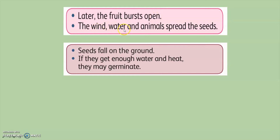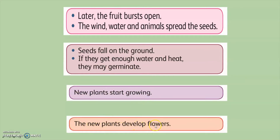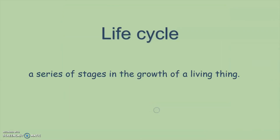Later, the fruits burst open. Wind, water, and animals spread the seeds. Seeds fall on the ground. If they get enough water and heat, they may germinate and new plants start growing. The new plants develop flowers. So remember: a life cycle is a series of stages in the growth of living things.